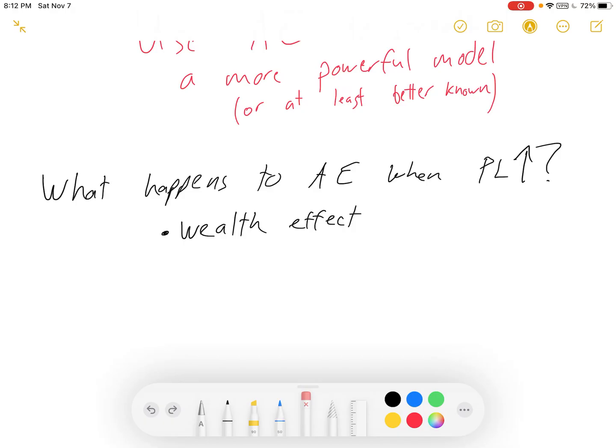Now there's a wealth effect, which is that if the price level rises and nothing else rises, like for instance if the money supply doesn't keep up, well then people's money can't buy as much as it used to. So as prices rise, aggregate expenditures will fall.